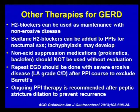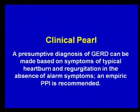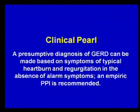All of these recommendations came from the ACG guideline 2013 in the American Journal of Gastroenterology. The clinical pearl here is that a presumptive diagnosis of reflux can be made based on symptoms of typical heartburn and regurgitation in the absence of alarm symptoms, and an empiric PPI trial is recommended.